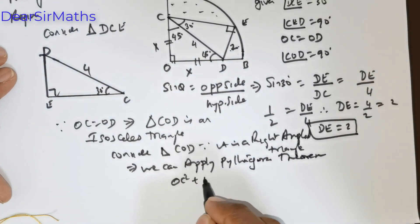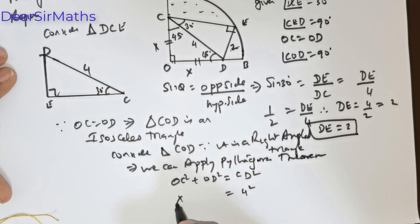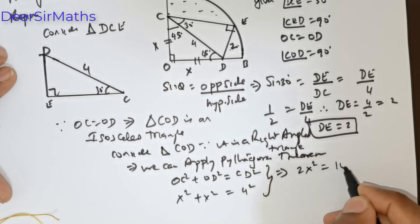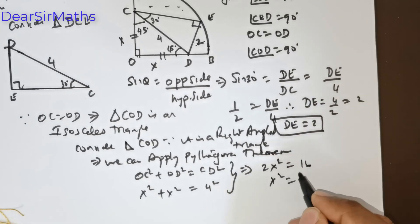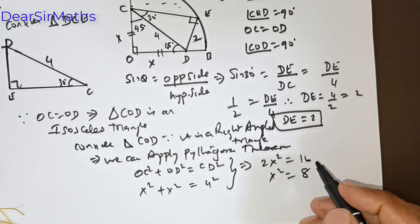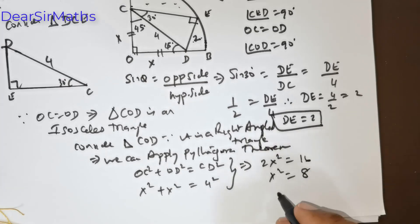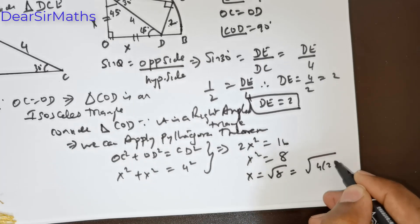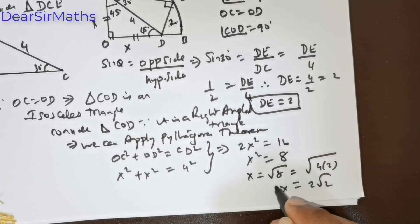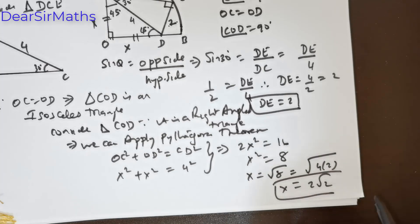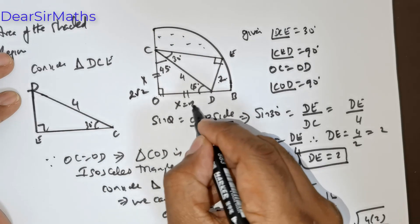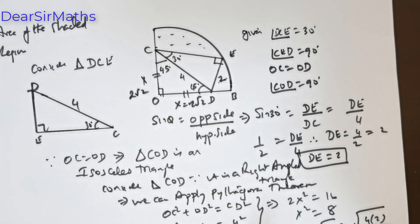OC squared plus OD squared is equal to CD squared. CD is 4, so 4 squared is 16. x squared plus x squared gives 2x squared equals 16, therefore x squared equals 8. So x equals root of 8, which is 2 times root 2. Therefore OC and OD are each 2√2.